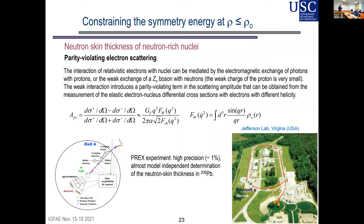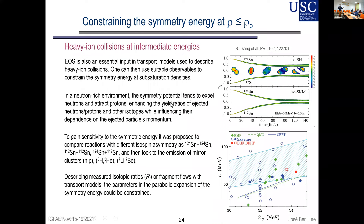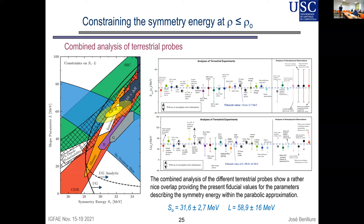Another technique uses heavy-ion collisions: the symmetry energy tends to produce ejectiles that are more neutron-rich, and by looking at ratios of isospin pairs — neutron/proton, tritium/helium-3, lithium-7/beryllium-7 — you can relate these to the symmetry energy, though it requires transport calculations and the connection is less direct. Combining all these techniques gives constraints on both S and L around saturation density.